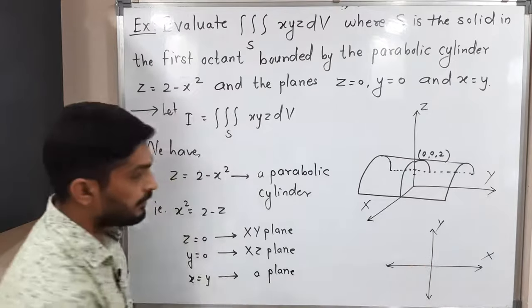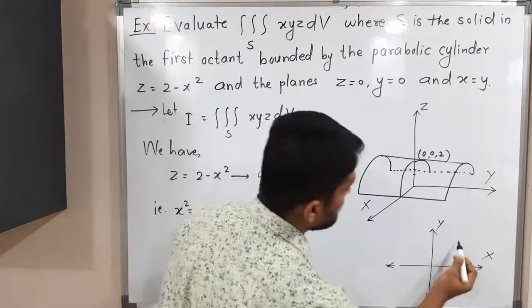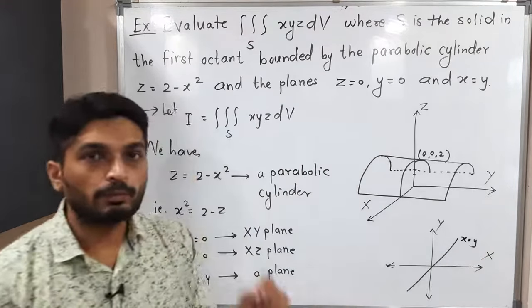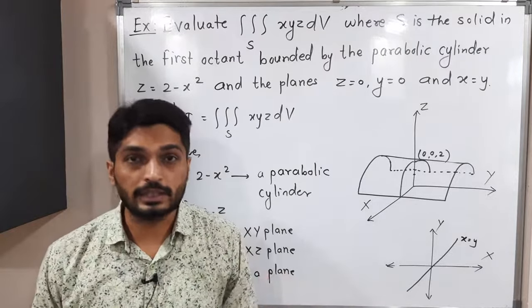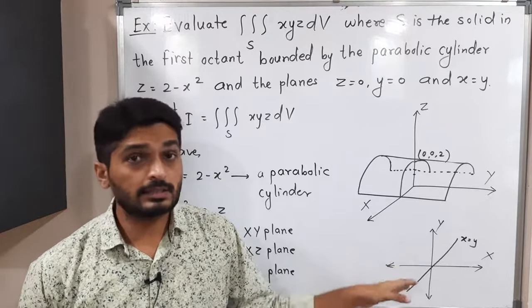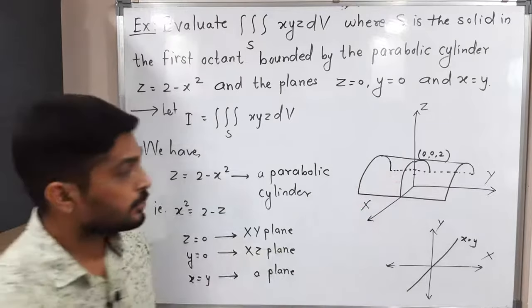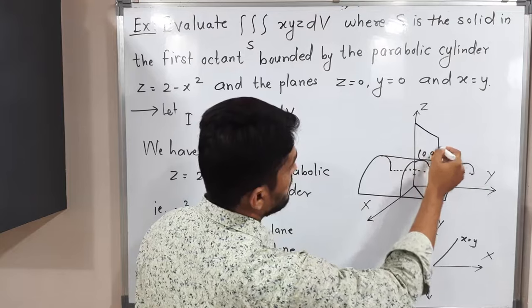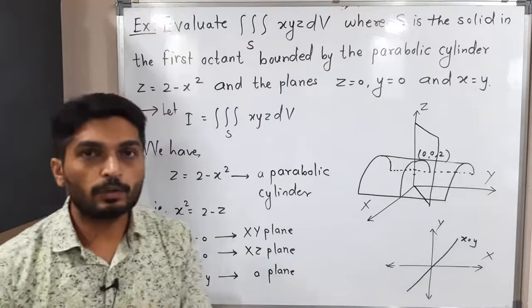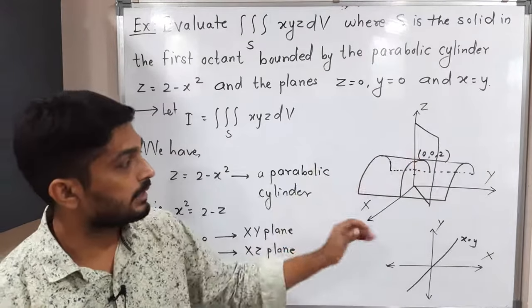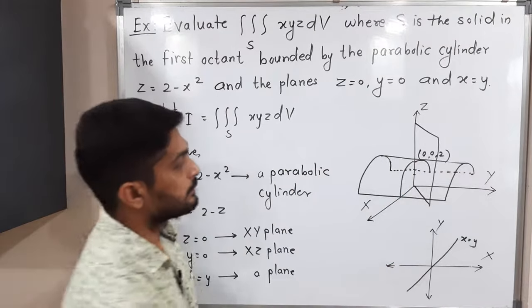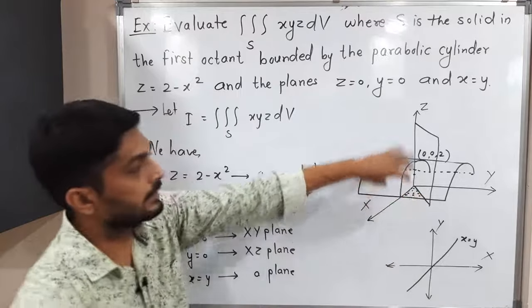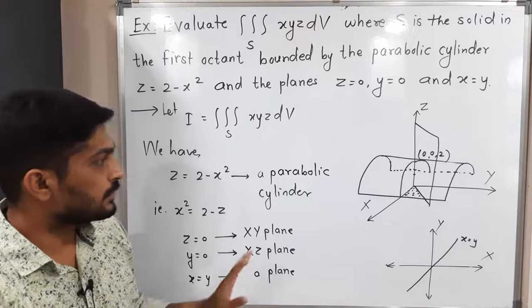First we will try to draw its graph in 2D, in the XY plane. It represents a straight line passing through the origin. To draw any line, we make a table, put values of X, find values of Y, get two points, and join them. This is a line in the XY plane, but in 3D it will be a plane. So I hope all of you are getting it. The region is bounded by this parabolic cylinder, the XZ plane, the XY plane, and this plane x = y. This is the region of integration.